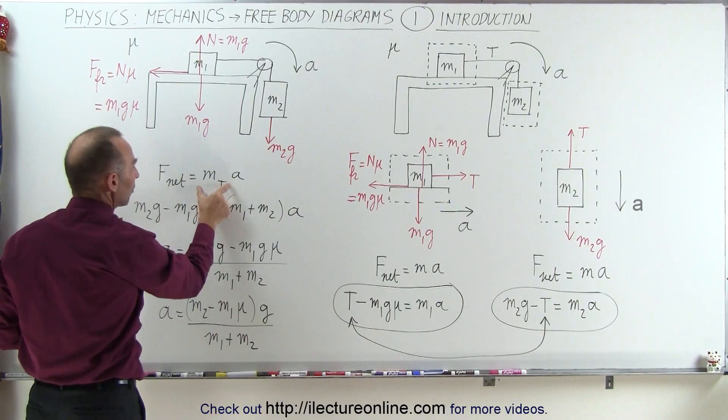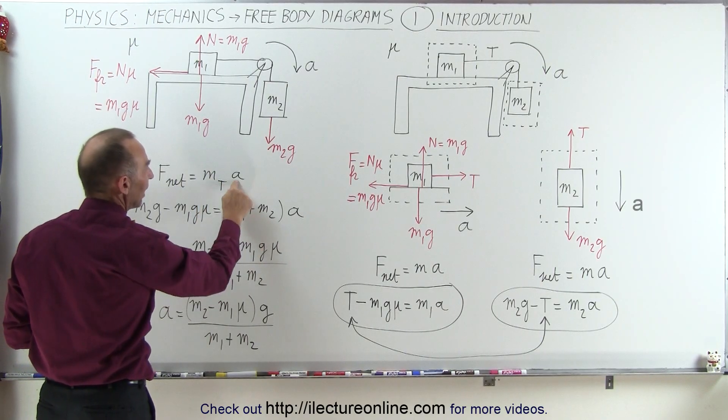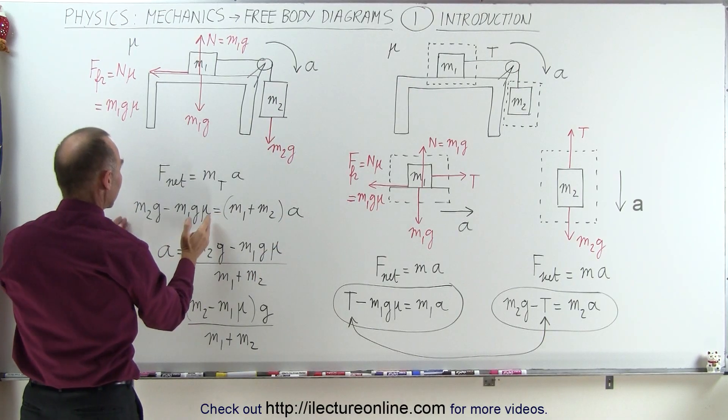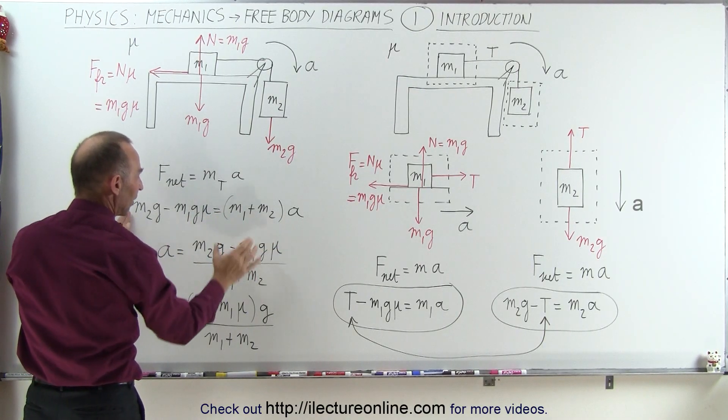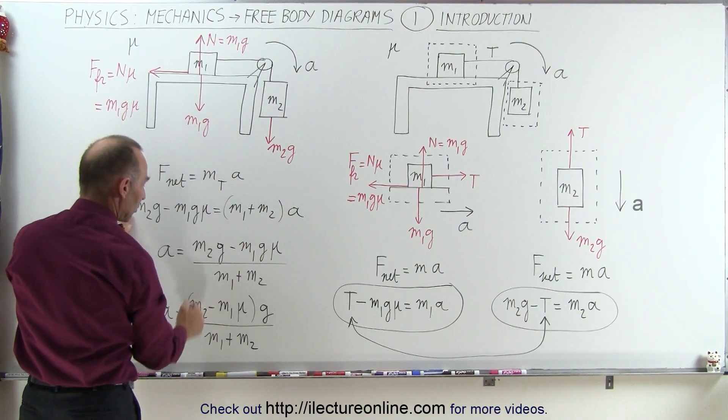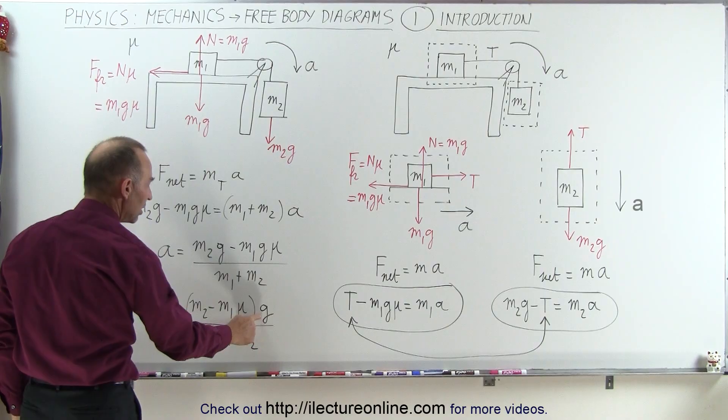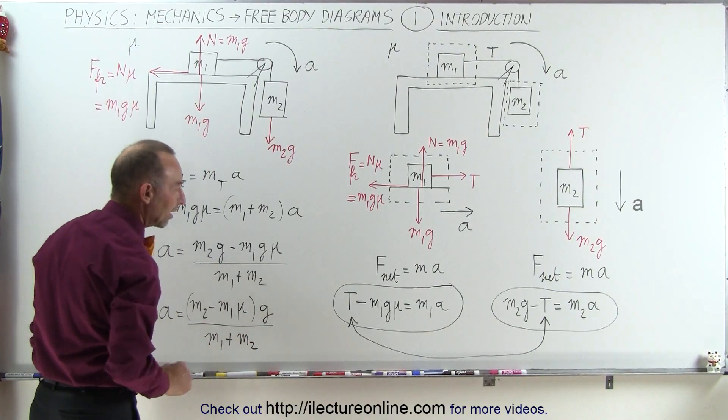So then we see that the total mass is simply the sum of the two masses and this would then be the acceleration we're looking for. Solving this for a, we then take the left side divided by m1 plus m2, and then we can factor out a g so the acceleration is simply m2 minus m1 mu times g divided by the sum of the two masses.